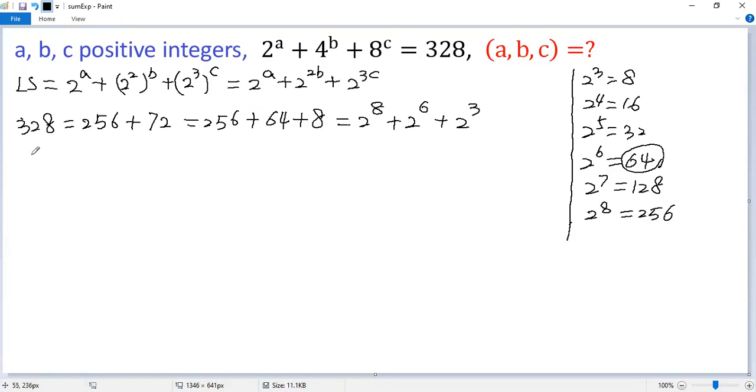So the given equation becomes 2 to the power of a plus 2 to the power of 2b plus 2 to the power of 3c equals 2 to the power of 8 plus 2 to the power of 6 plus 2 to the power of 3.